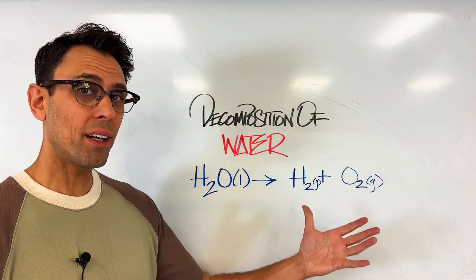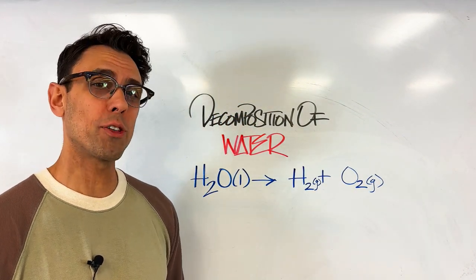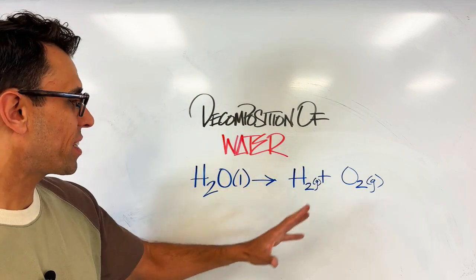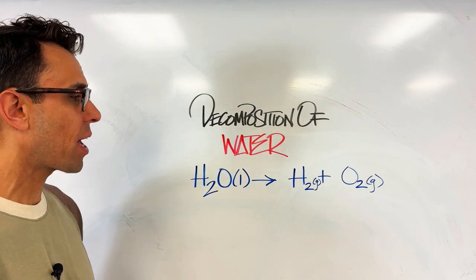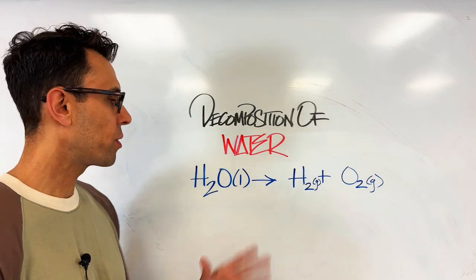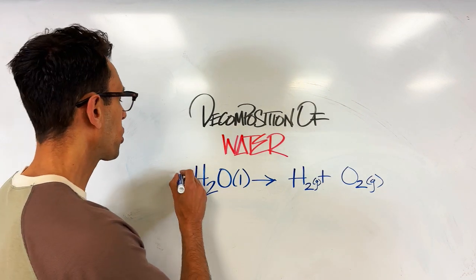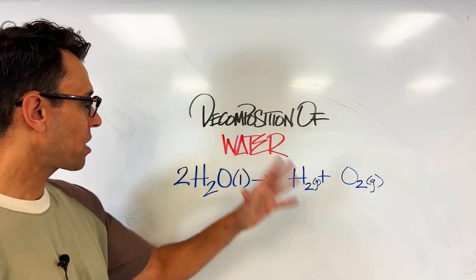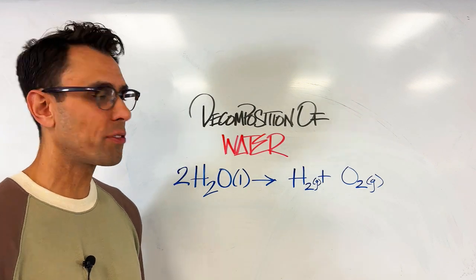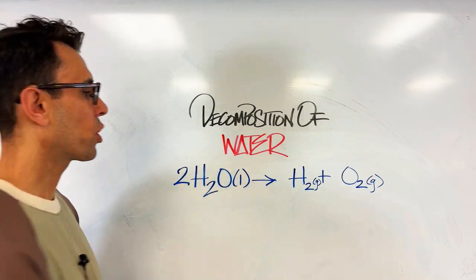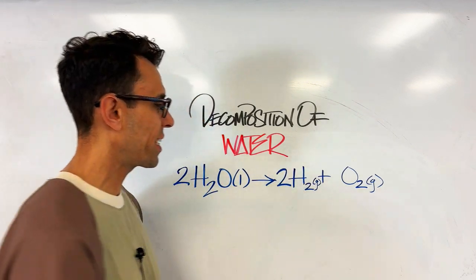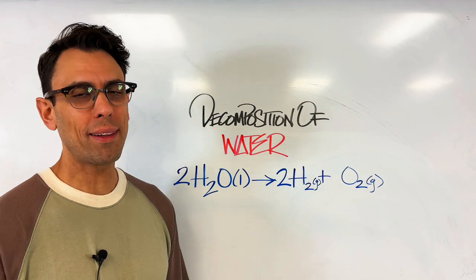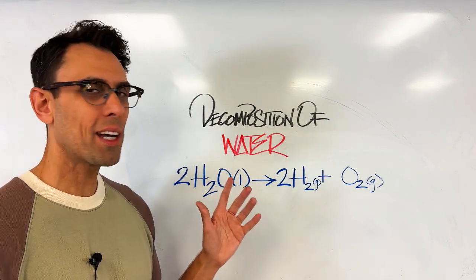Now we always want to check to make sure we're abiding by the law of conservation of matter. Do we have the same number of atoms on both sides? I don't think we do. There's a small imbalance here. So we're going to add a coefficient of two and that'll make the number of oxygens the same on the left and right side. And then we're going to have to go over here and put a two in front of the H2. This is the balanced chemical equation for the decomposition of water.